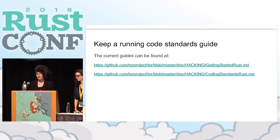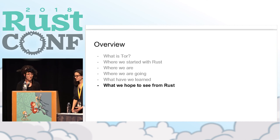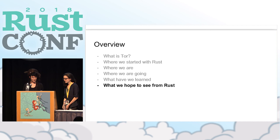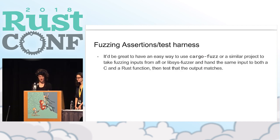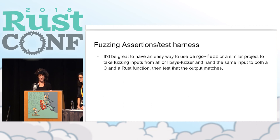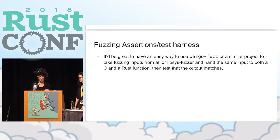If these guides are useful for your project, feel free to take them, and if you have more guidelines to contribute we'd be happy to take pull requests. One thing we hope to see from Rust in the future: with the binary parser, Chelsea and I essentially sat there writing hundreds of unit tests trying to find all the edge cases — like if you put two commas in a row, does a different thing happen in C versus Rust? We didn't have an easy way to hook up AFL or cargo fuzz and say: take the same fuzzing input, give it to both the C function and the Rust function, and test that the output is exactly the same.